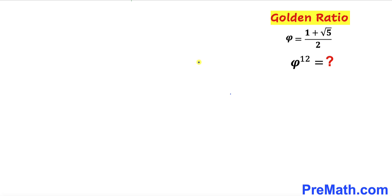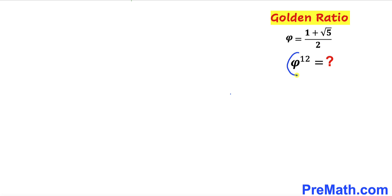Welcome to pre-math. In this video we are going to talk about the golden ratio, which is denoted by phi. Phi is always equal to 1 plus square root of 5 divided by 2, and our task is to find the value of phi power 12.